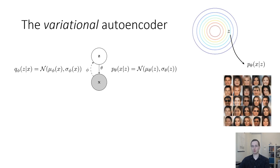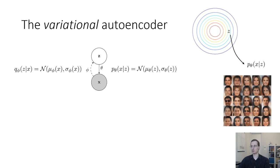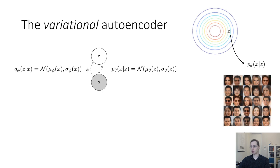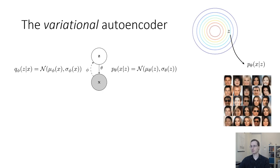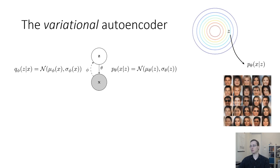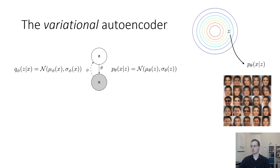Here you're seeing pictures of faces actually generated by a variational autoencoder. It was trained using the architecture shown previously, and then after training you just sample z from the prior p of z and use the decoder to generate images. The encoder is not used in this part.